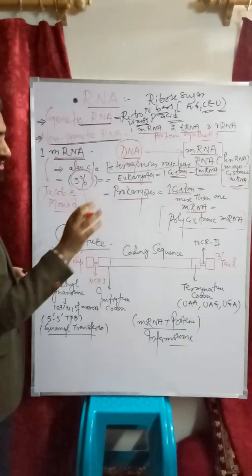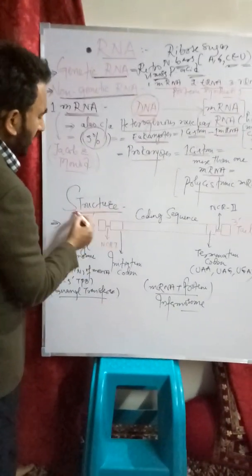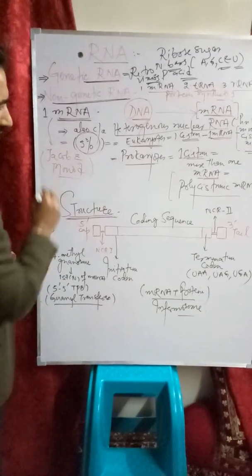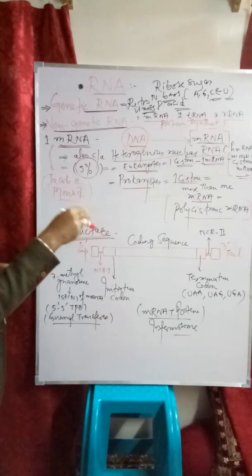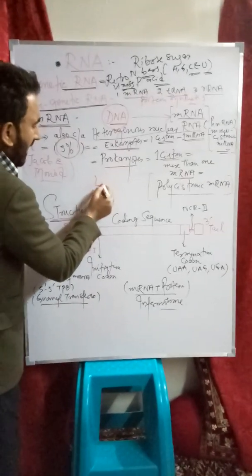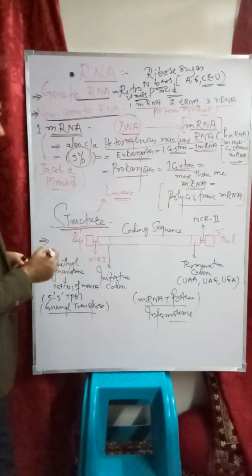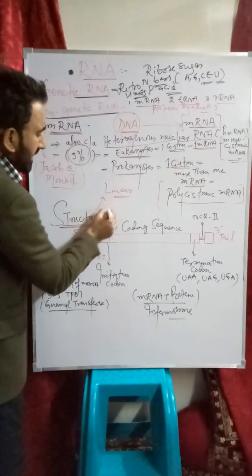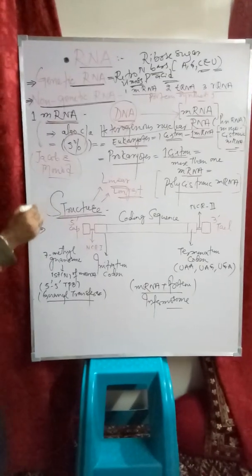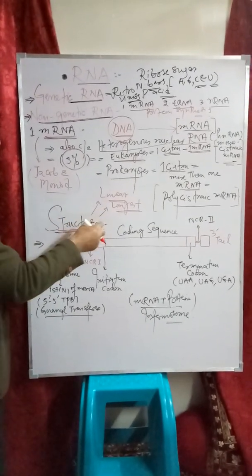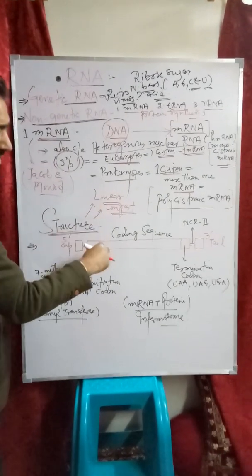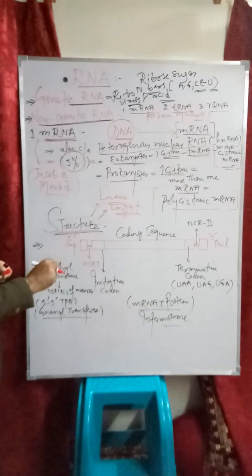Now we will discuss the structure of messenger RNA. The term messenger RNA was coined by Jacob and Monod. The mRNA has a linear or straight structure and is the longest RNA among the three types of non-genetic RNA. Its structure is composed of the following components.